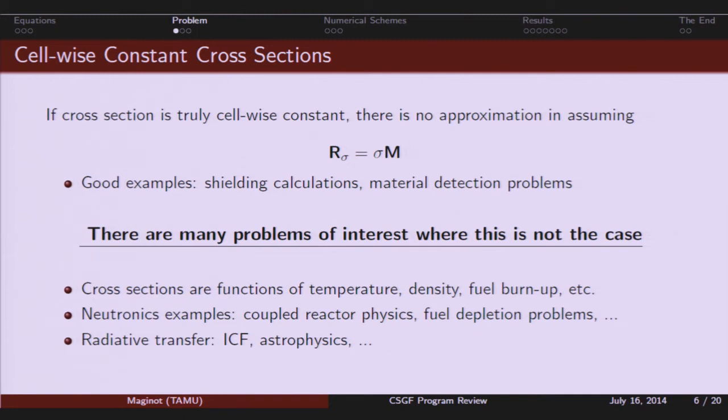All right. So, I mentioned that the R matrices have cross-section weighting in them. If cross-section is cell-wise constant, there's no approximation in pulling that sigma out of the integral and just leaving it as a constant in front of the integral. And then you just have R sigma is equal to the cell-wise constant cross-section multiplied by the usual mass matrix. All right. So, for a lot of problems, this is no approximation. So anything where you can basically say, I have one material here, another material there. There's no property variation between. That's a good approximation.